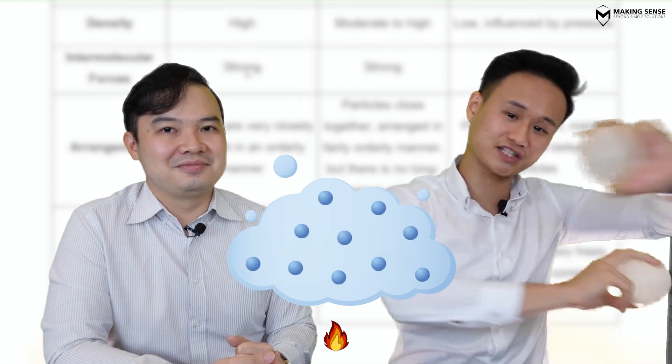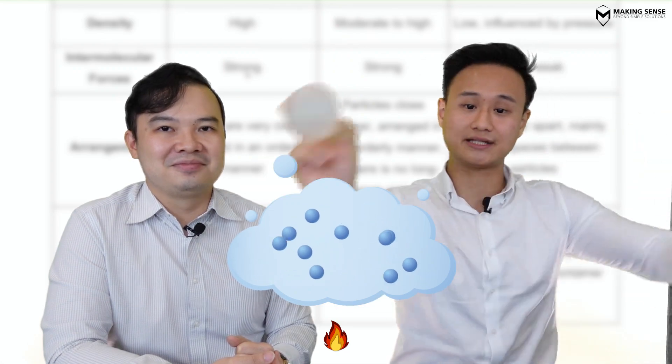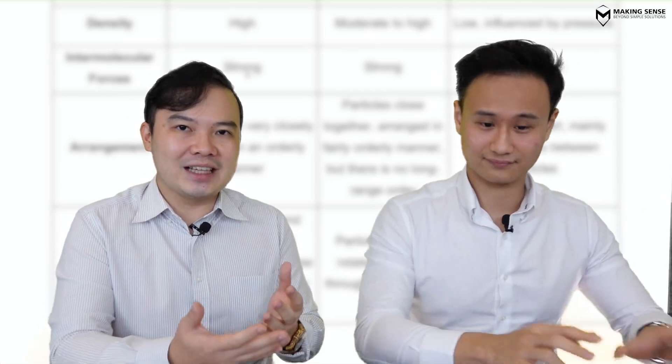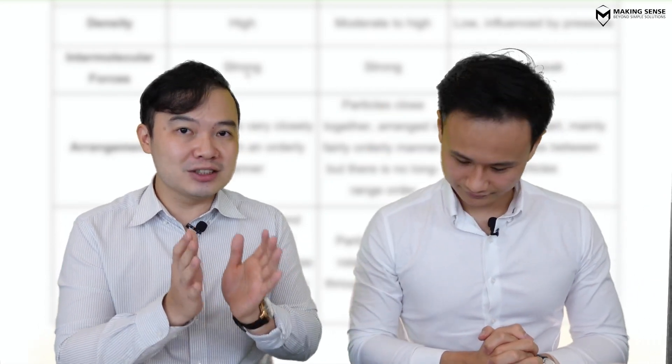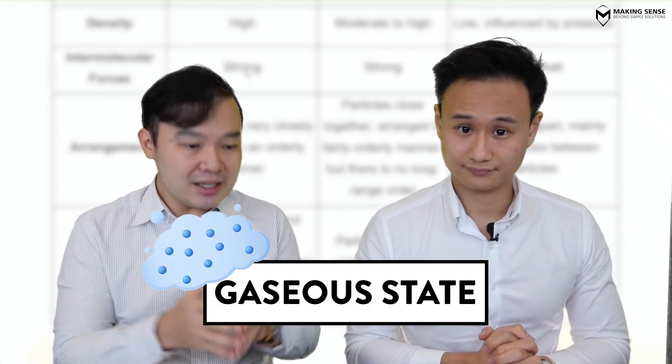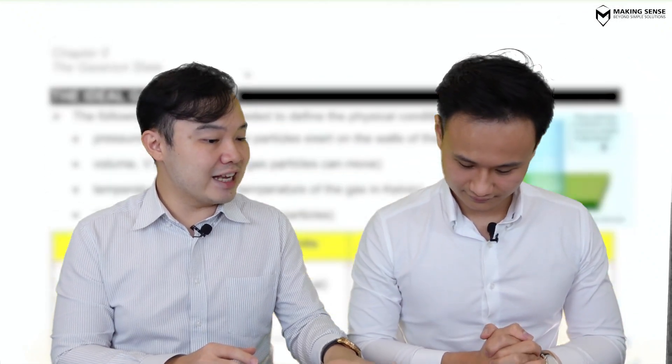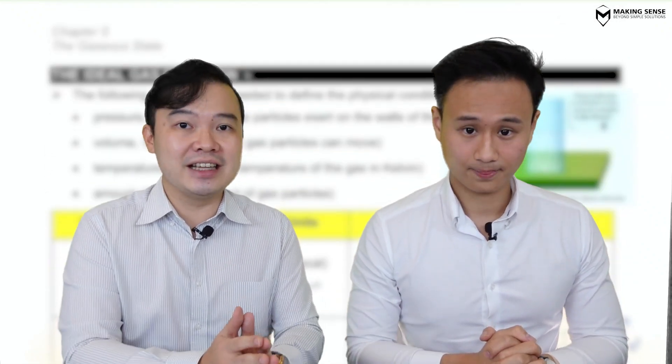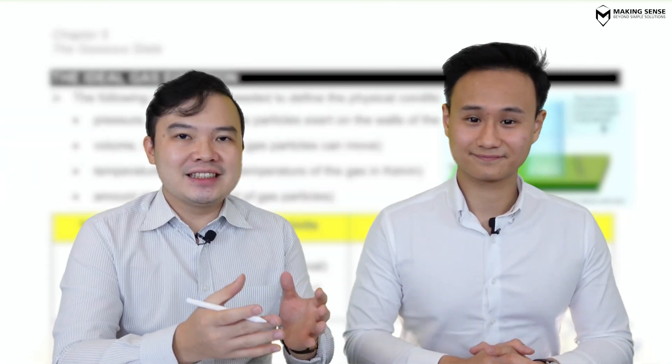In the gaseous state, when you heat it past its boiling point, the arrangement becomes really really messy — all over the place — and they're zooming past each other at high speeds. It's going to be in a disorderly arrangement and very far apart. As the name of the chapter suggests, we're going to focus solely on the gaseous state.